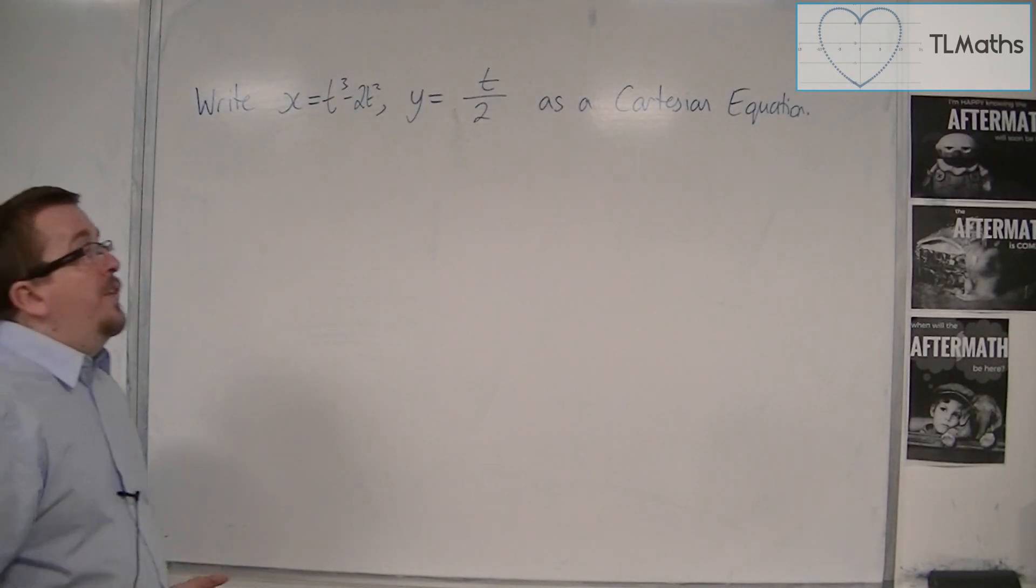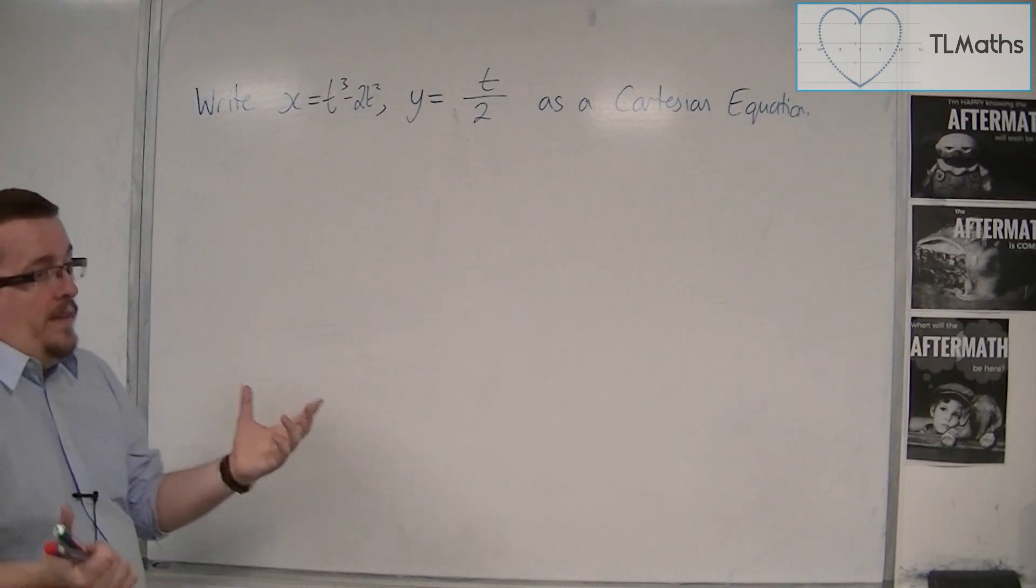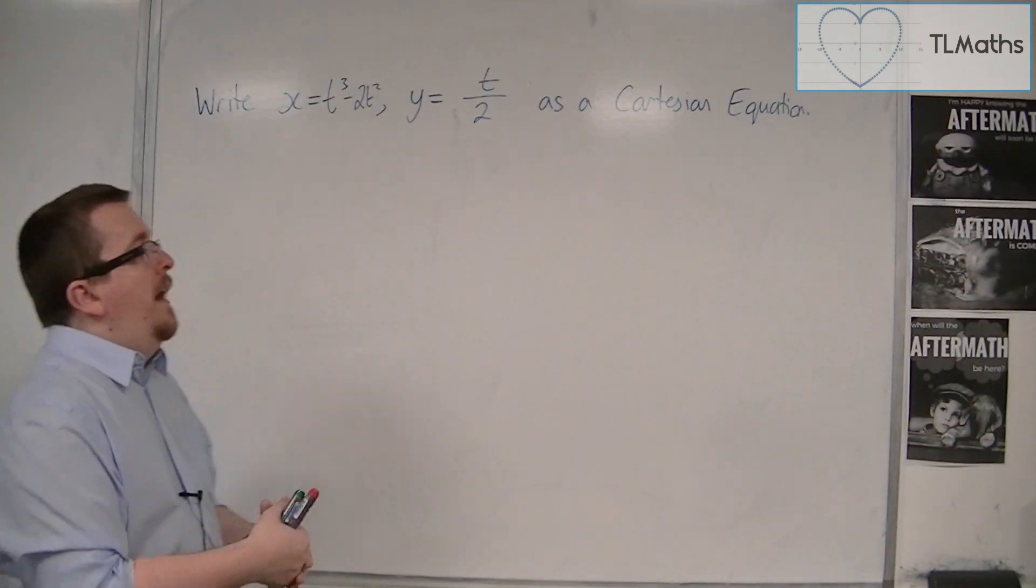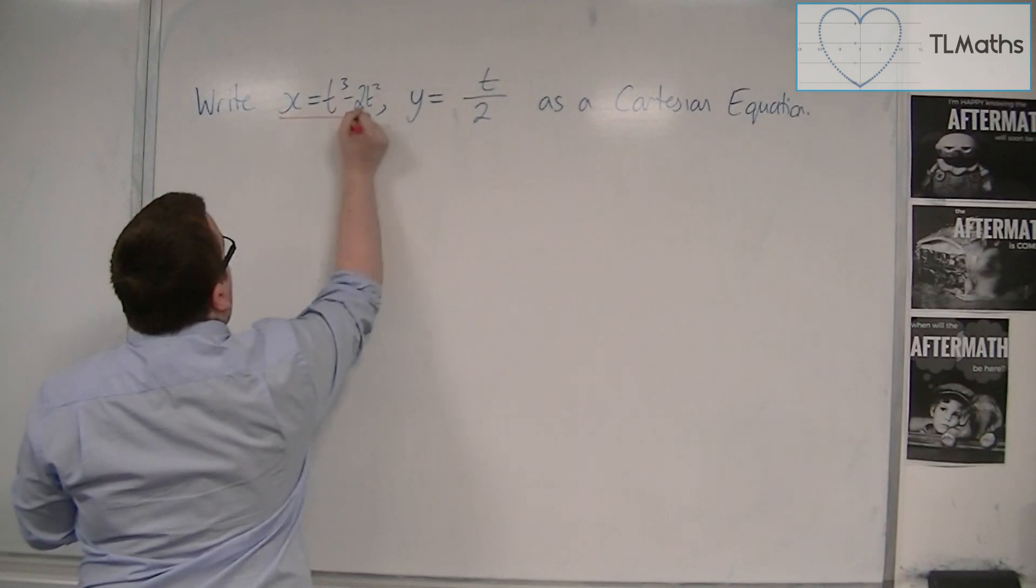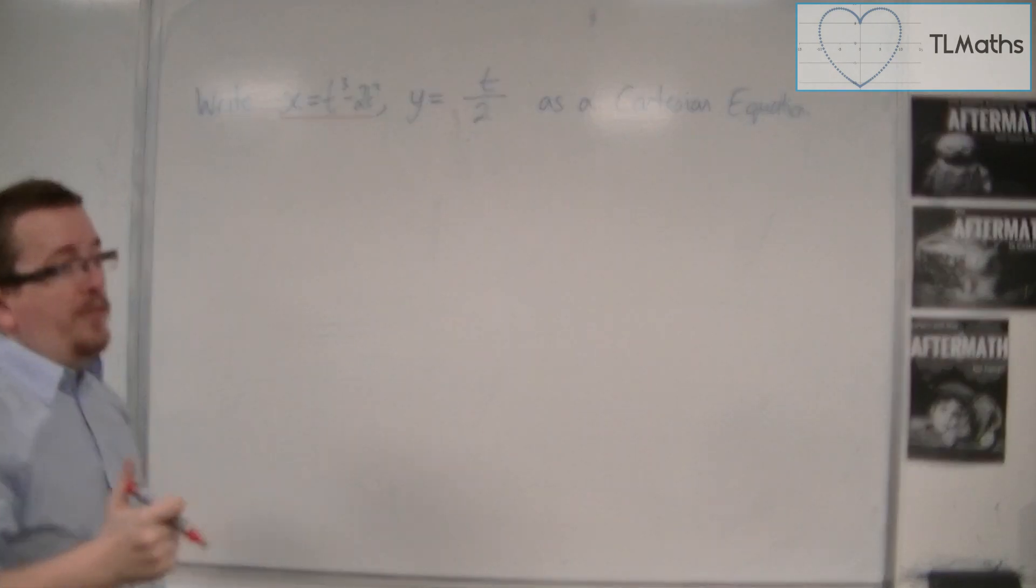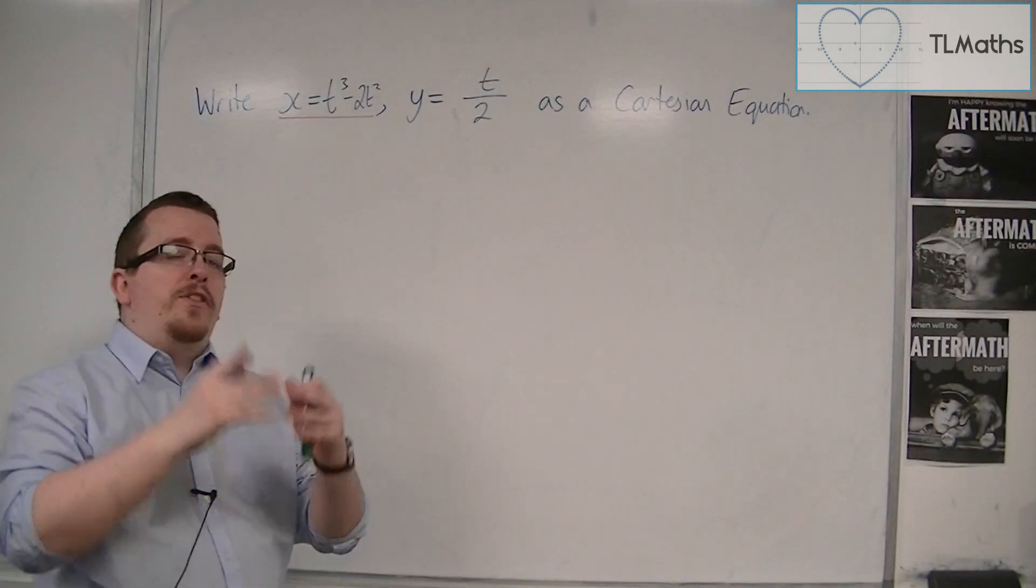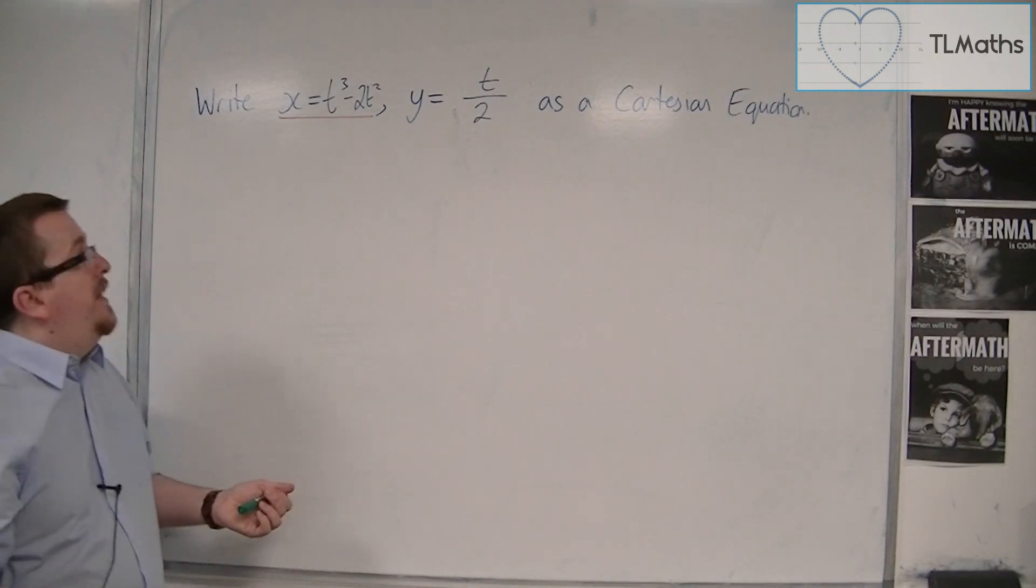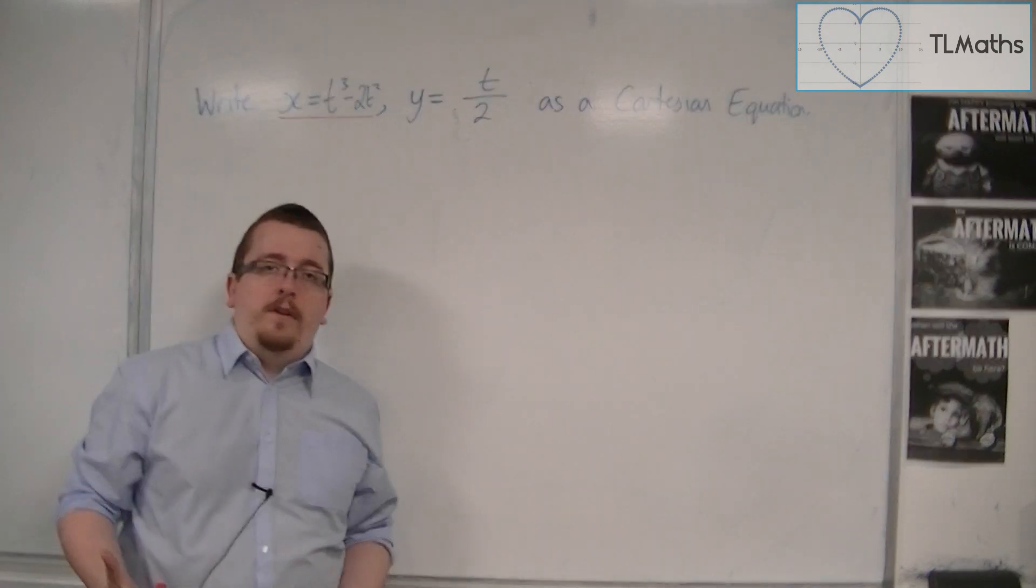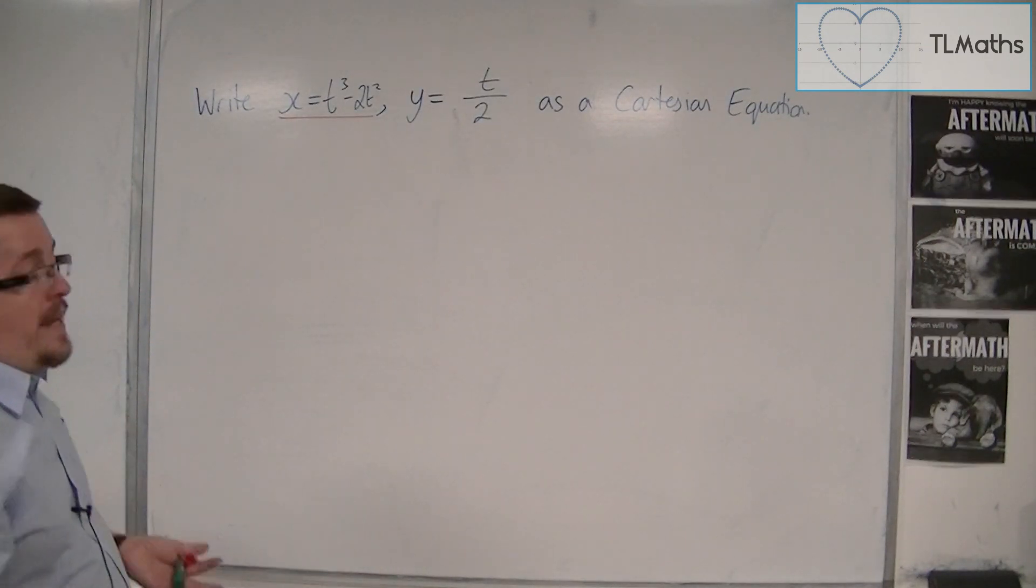Following on from the previous videos, you can see that there are some restrictions here. In this case, if we look at x = t³ - 2t², even thinking or trying to rearrange that to get t equals, we can see that it is just impossible. And it actually is.